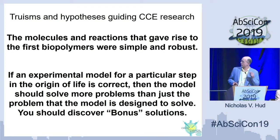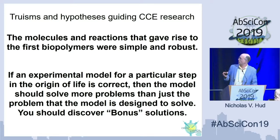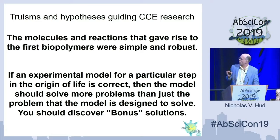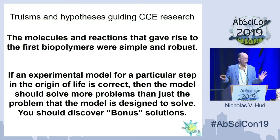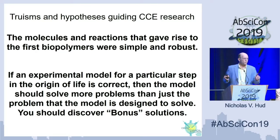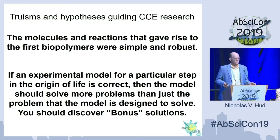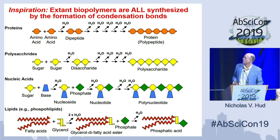We say that if an experimental model for a particular step in the origin of life is correct, then the model should solve more problems than just the problem it was designed to solve. At the very least it should not generate more problems, but ideally if you're on the right track it should solve more problems than you know — and if that's true, then you should discover what we call bonus solutions.